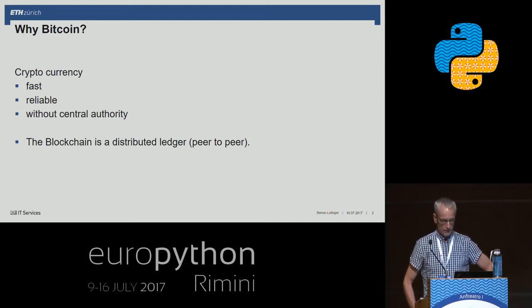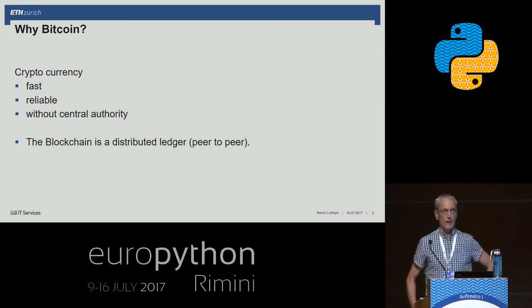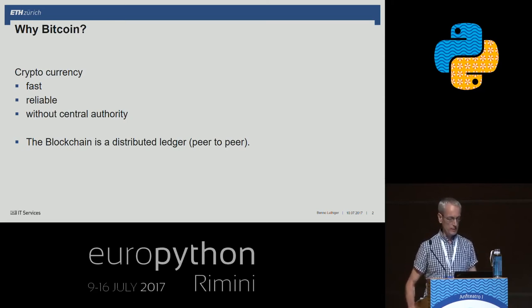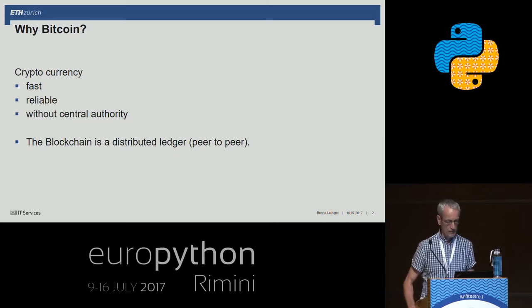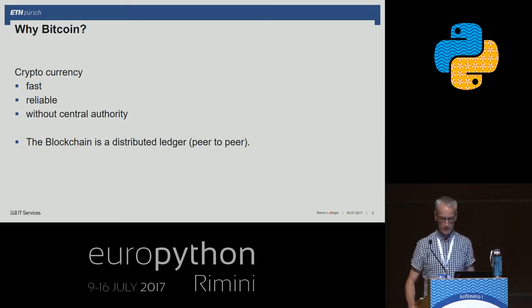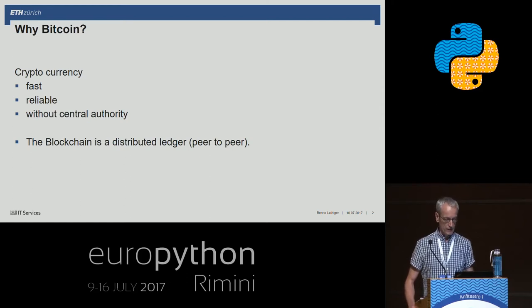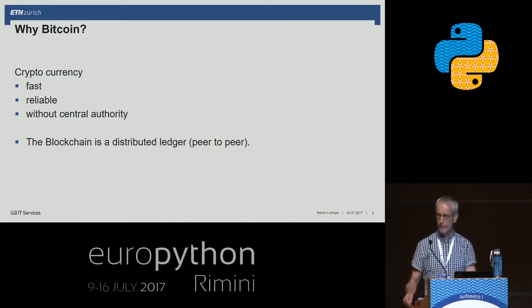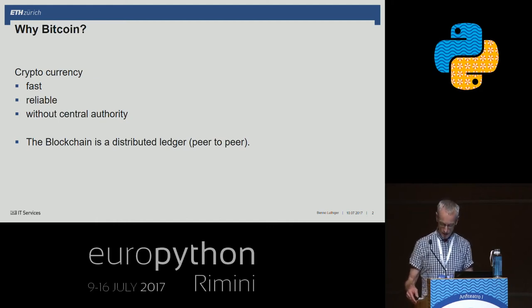To work around this, we have to distribute what the bank or the central authority made to every computer, and this is the reason for the blockchain. It's a distributed ledger, it's a peer-to-peer network. But of course, if we distribute the ledger, this comes with other problems.